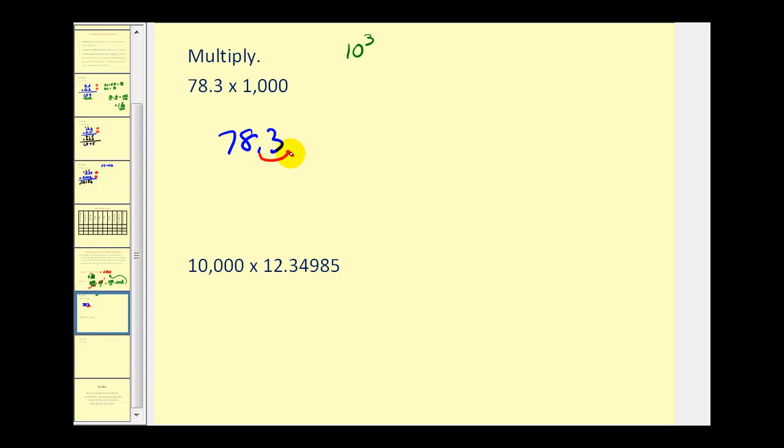we move the decimal to the right three places: one, two, three. We didn't have enough digits, so we have to add some zeros here. So this product would be 78,300.